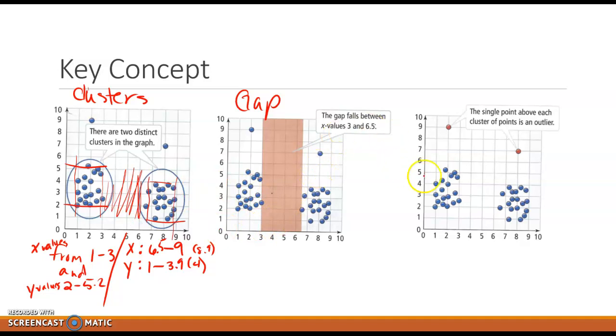And then our last one's outliers. These are any points that lie away from all the other points. So like when we look at these two here, we said over here that the cluster that y value wise was from two to 5.2. This one's clear up at nine. So it would be considered an outlier. Our second cluster went from one to four, and this one's all the way up at seven. So that's an outlier because it's not part of the clusters.